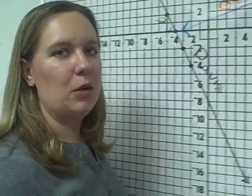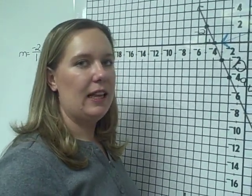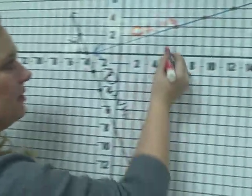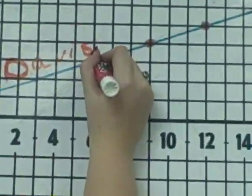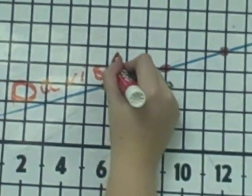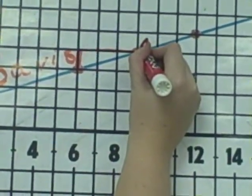Again, to find the slope, we're going to count how many we rise and how many we run. And it doesn't matter which two points we use to determine the slope of the line. Rising is moving up, so we're going to rise one, and we're going to run one, two, three points.